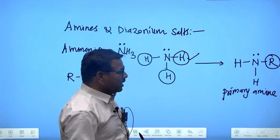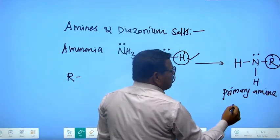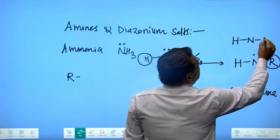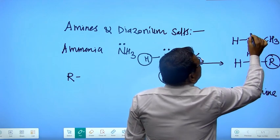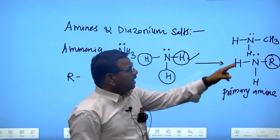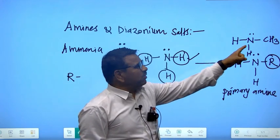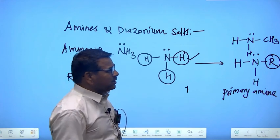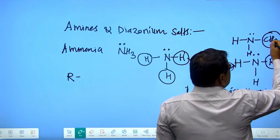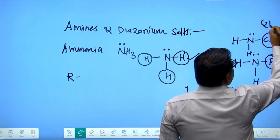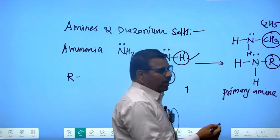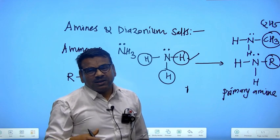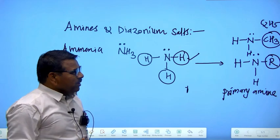To get the actual name of these primary amines, just replace R with any specific alkyl group. For example, if we have nitrogen with CH3 and two hydrogens, with a lone pair, that is methylamine — because one hydrogen is replaced by a methyl group. Likewise, using C2H5 gives ethylamine, propyl group gives propylamine, and so on for butylamine, pentylamine, hexylamine. So this is the primary amine.